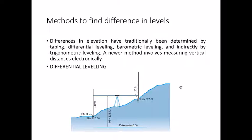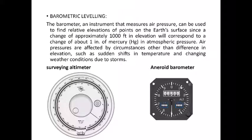This is called differential leveling, but we have other methods which may not be as accurate. Another method is barometric leveling — we make use of the difference in air pressure. As altitude or elevation changes, air pressure keeps changing, and there is a relation between the change in air pressure and the change in height. We have instruments that can gauge this, including a surveying altimeter installed in aircraft, which gives you elevation or reduced level based on this property of air.